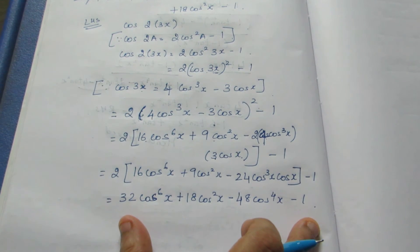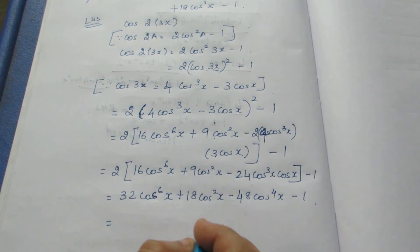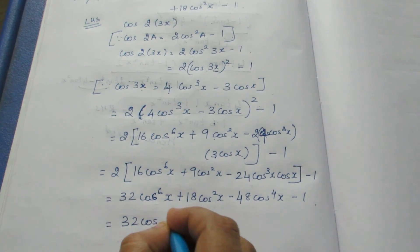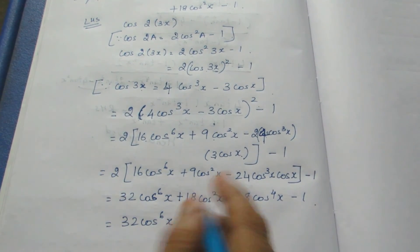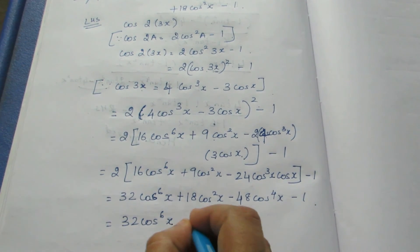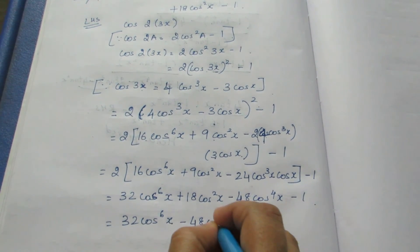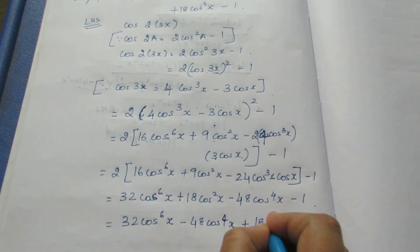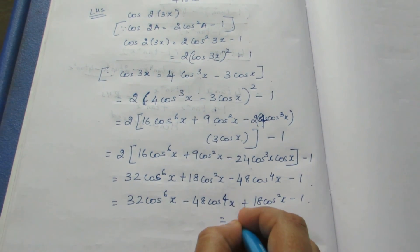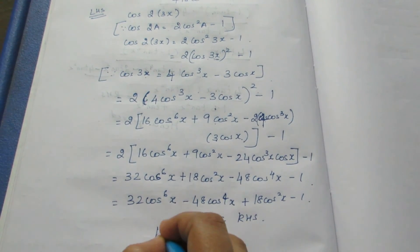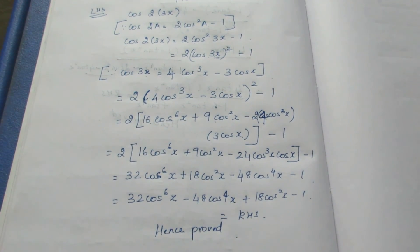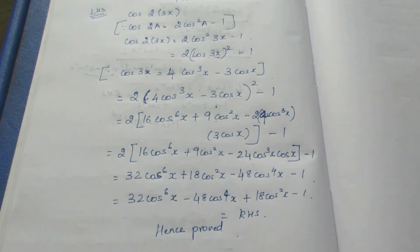Write it in the order they have given. Always give the answer exactly as in the RHS. So this is 32 cos⁶x minus 48 cos⁴x plus 18 cos²x minus 1. This equals our RHS and is proved. That's all with the sum, thank you.